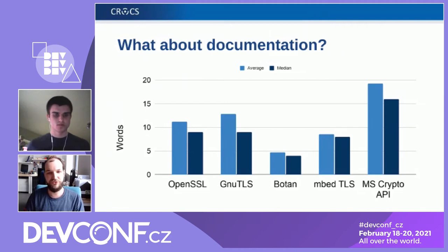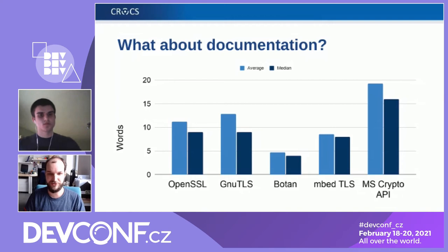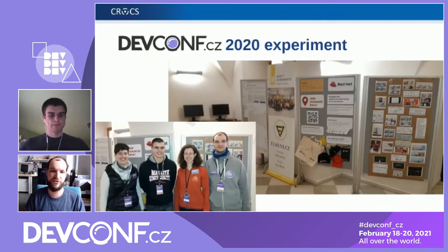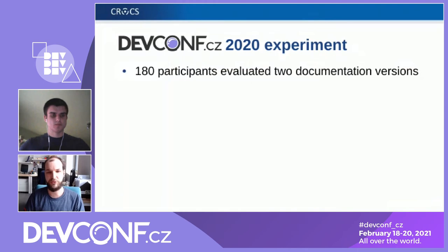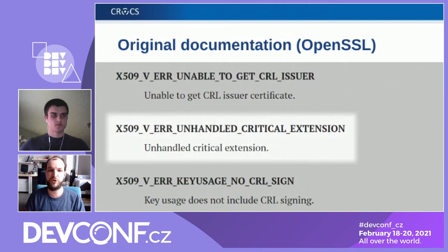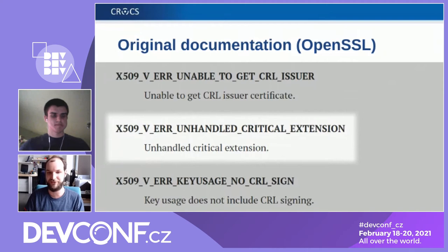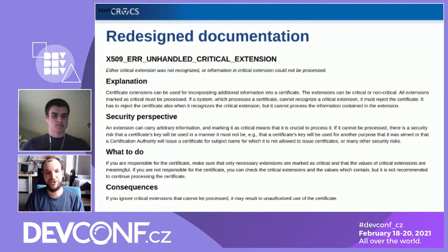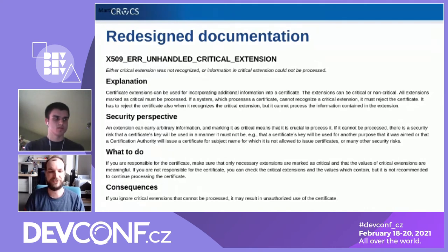Because we find 10 words to be insufficient to understand what, for example, 'unhandled critical extension' means, we started to draft new documentation. At DevConf 2020, we did another experiment asking 180 participants who stopped at our booth to evaluate two documentation versions. One was the original — very short, saying just 'unhandled critical extension'. Ours was maybe even overly long, but we wanted the second extreme so we could discuss where between these two the ideal documentation in the mind of developers would be. This is the actual unhandled critical extension version we proposed next to the original one.